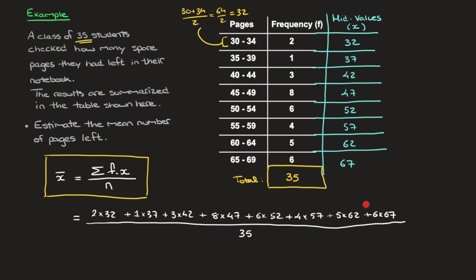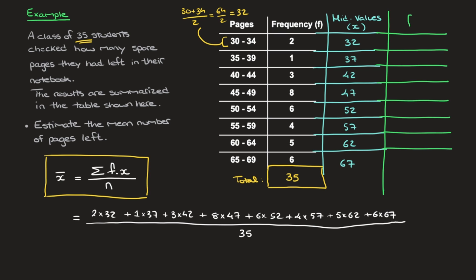All we have to do is calculate everything on the numerator and divide by 35 to get the mean. But it's important to note that this numerator quickly gets very long — if the table were taller it wouldn't fit on the page. Consequently, rather than writing long numerators, it's usually best to add an extra column to the table in which we write the result of multiplying each frequency by its corresponding mid-value. I'll add another column and label it f times x, where f is each frequency and x corresponds to each mid-value.